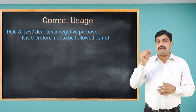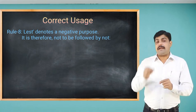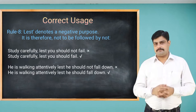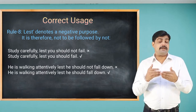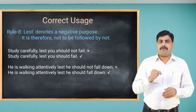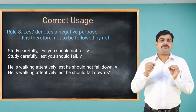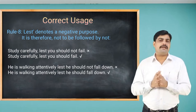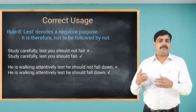Rule number eight: the word 'lest' denotes a negative purpose and therefore should not be followed by 'not'. For example, 'Study carefully lest you should not fail' is wrong — 'not' should be removed. Say: 'Study carefully lest you should fail.' Similarly, 'He is walking attentively lest he should not fall down' is wrong — say: 'He is walking attentively lest he should fall down.' Now the sentences are correct.